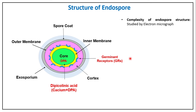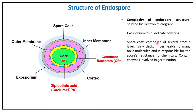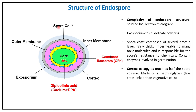Electron micrographs are examined to visualize all the layers of the endospore. The exosporium is a thin, delicate covering not present in every spore. The spore coat is composed of several protein layers; it is fairly thick, impermeable to many toxic chemicals, and is responsible for giving the spore its resistance to chemicals and environmental stresses — it is proteinaceous in nature.